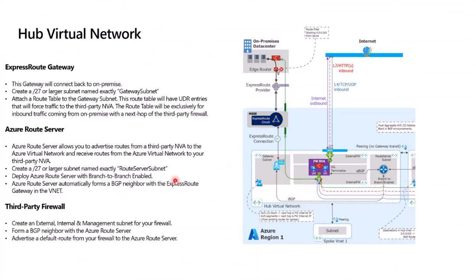Now we talk about our third-party firewall. Most of the time you will need to create an external, internal, and management subnet for your firewall. You will need to form a BGP neighbor from this third-party firewall to the Azure Route Server, and you will be advertising a default route from your firewall to the Azure Route Server.